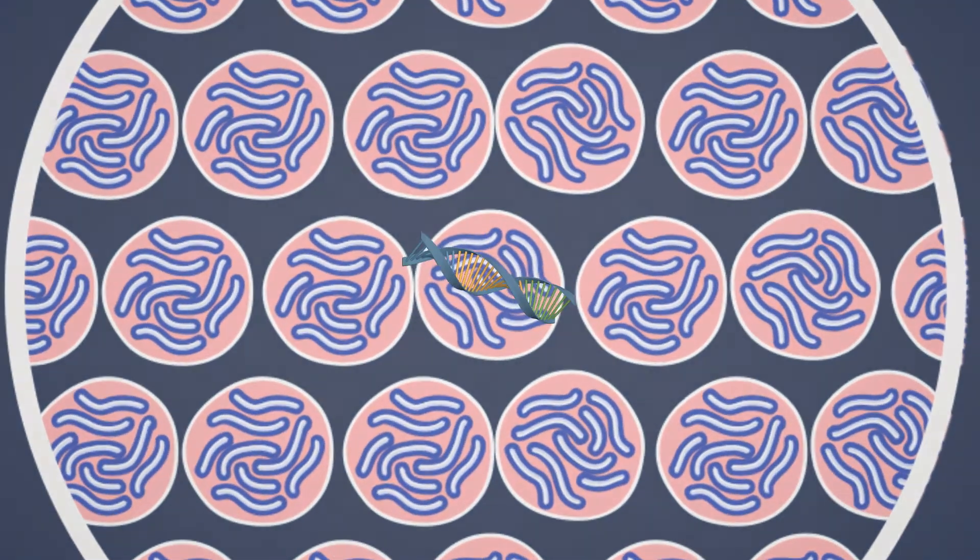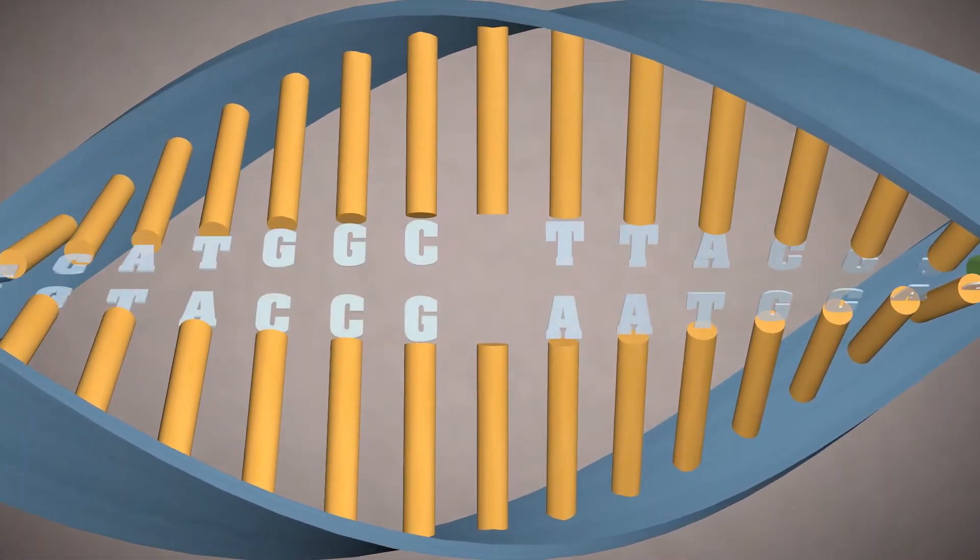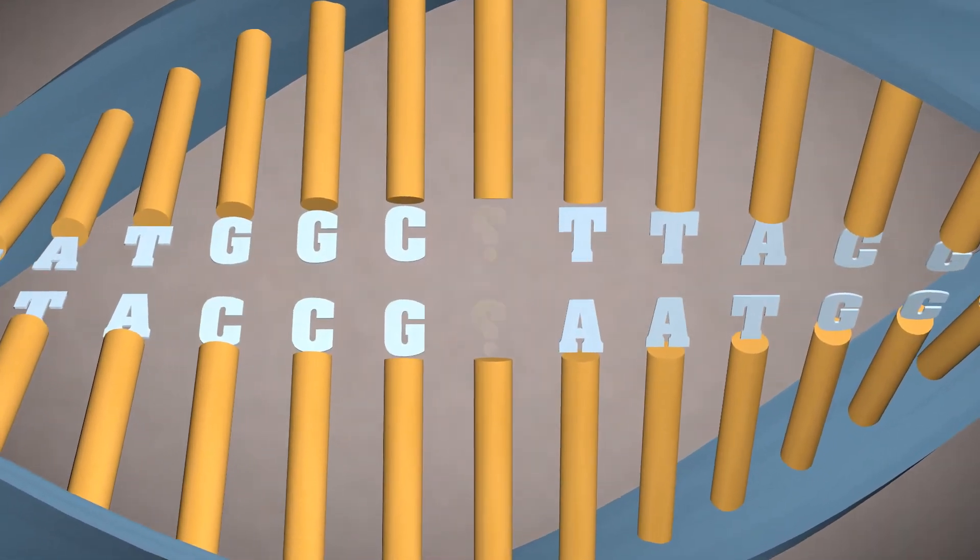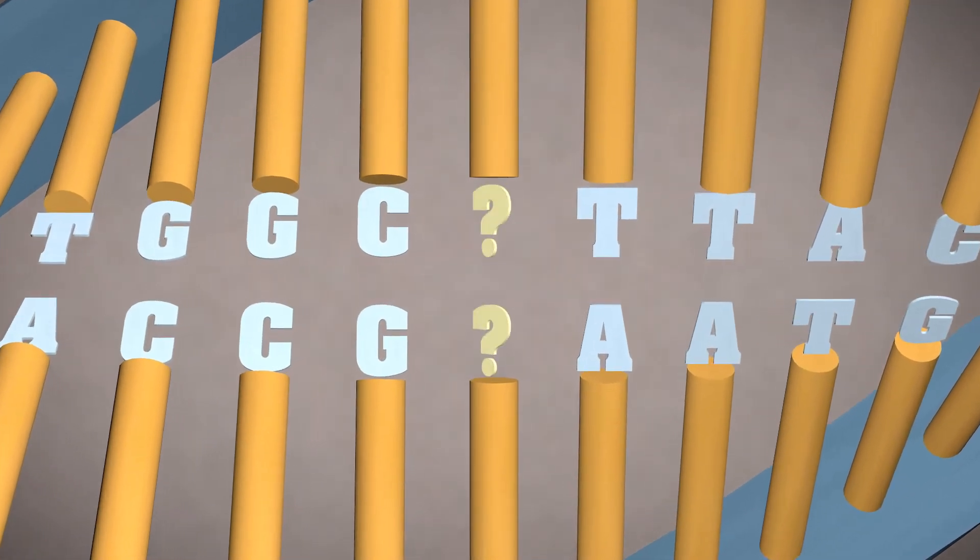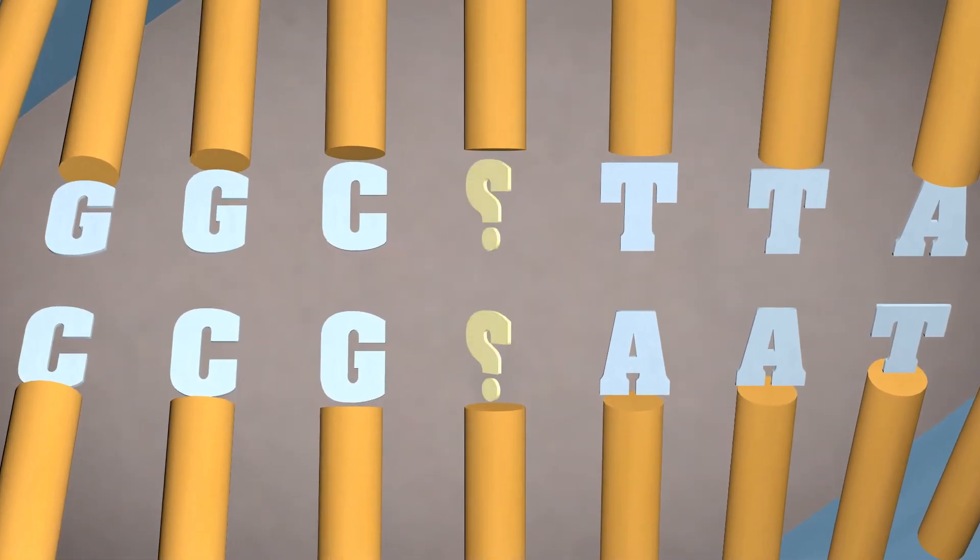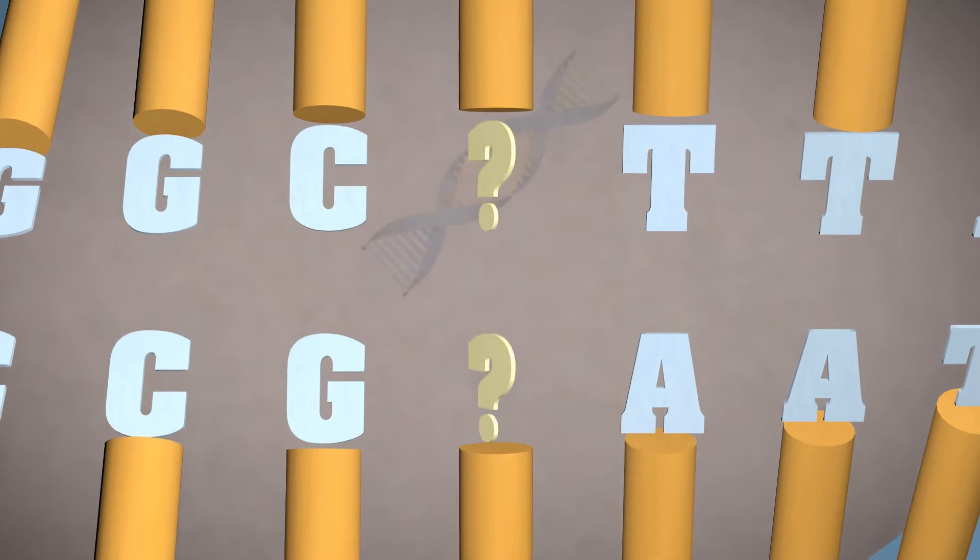We can classify each of these markers as an A, T, C, or G. By looking at one marker in particular, we can see how scientists can actually unlock the secrets hidden in your dog's ancestry.